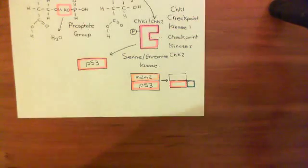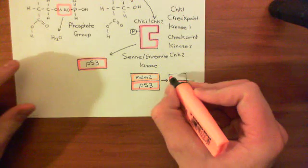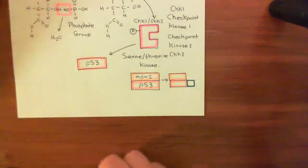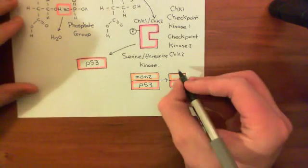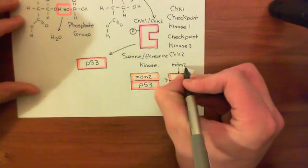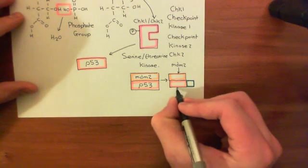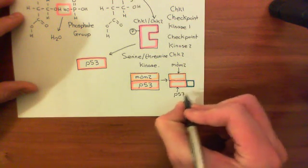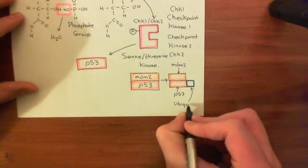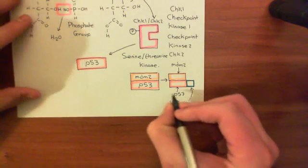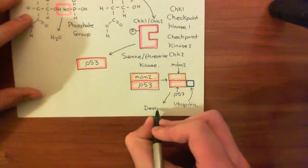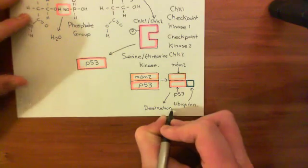The MDM2 then targets it for destruction. First, the MDM2 stops it from functioning, and then to add insult to injury, it's then going to actually have it destroyed. It firstly binds to it and stops it from functioning, and then it has ubiquitin groups stuck on the side of it, and that leads to the P53 being destroyed. This leads to the destruction of P53. That is what is keeping P53 from being active in the usual cell.